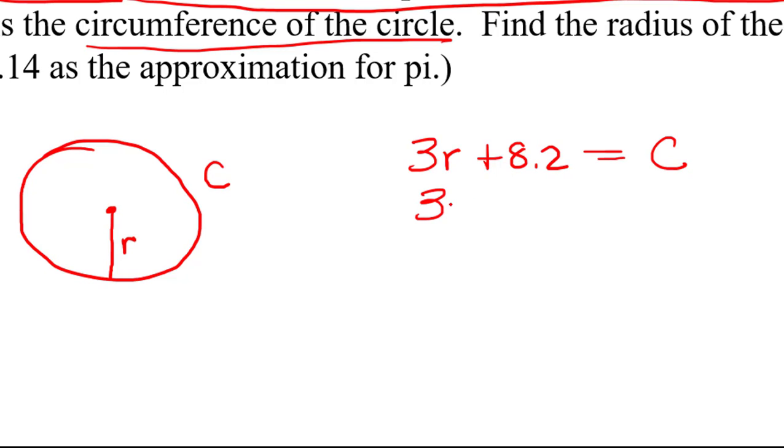So we could replace circumference with 2 pi r, what it's equal to. And now we have an equation that only has r in it. Now we don't want to use pi because they told us to use 3.14.